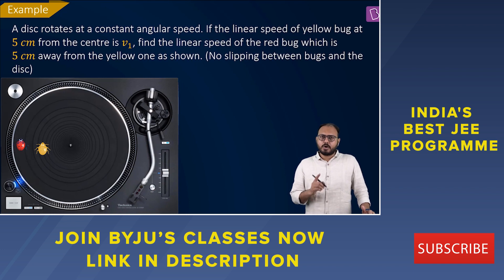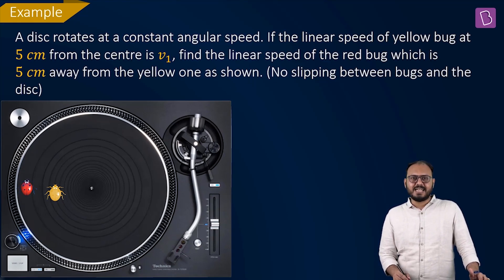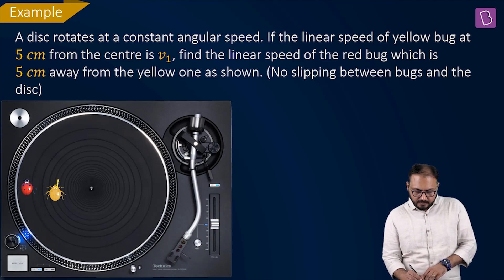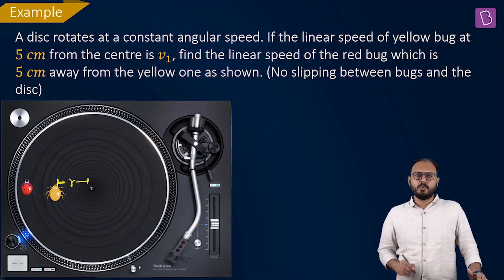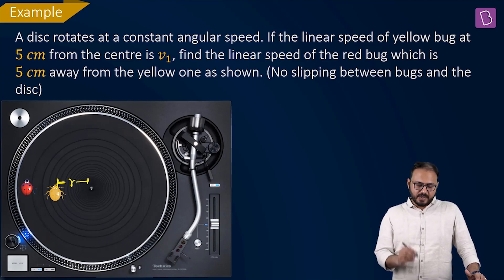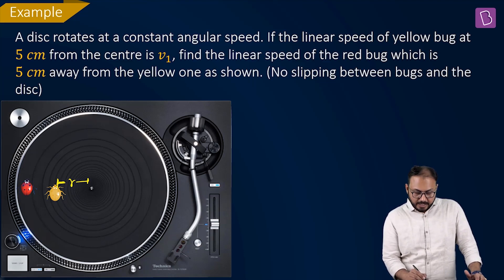A disc rotates at a constant angular speed. If the linear speed of the yellow bug at 5 cm from the center is v₁, so basically this guy is at a distance r, and what is its speed? v₁. Find the linear speed of the red bug which is 5 cm away from the yellow one. So this is further r.